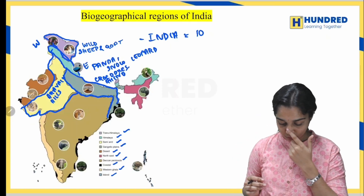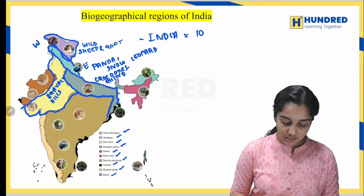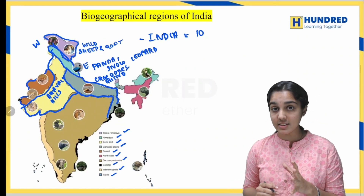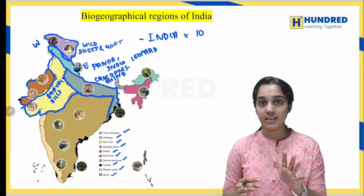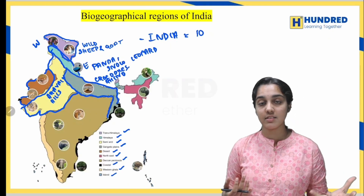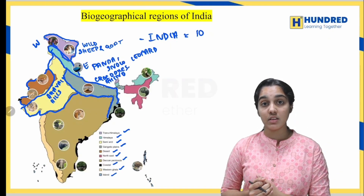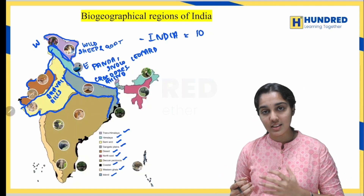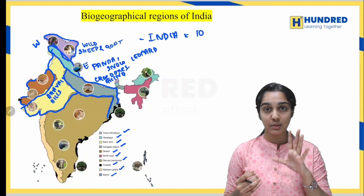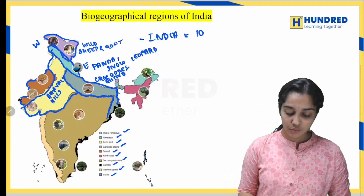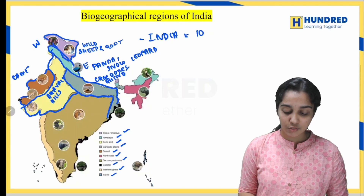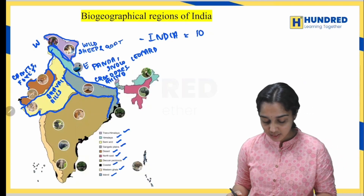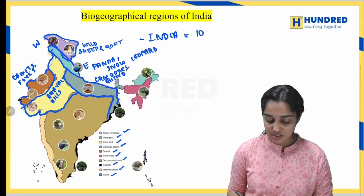Next is the desert zone, shown in brown. This includes the Thar Desert of Rajasthan and the Rann of Kutch, which is a salt desert of Gujarat. The animals present in the desert areas include camels and foxes.